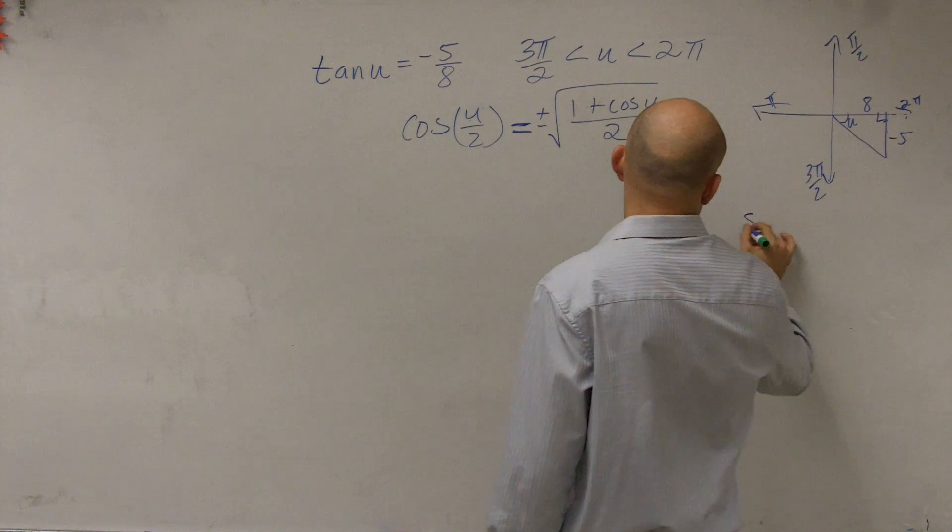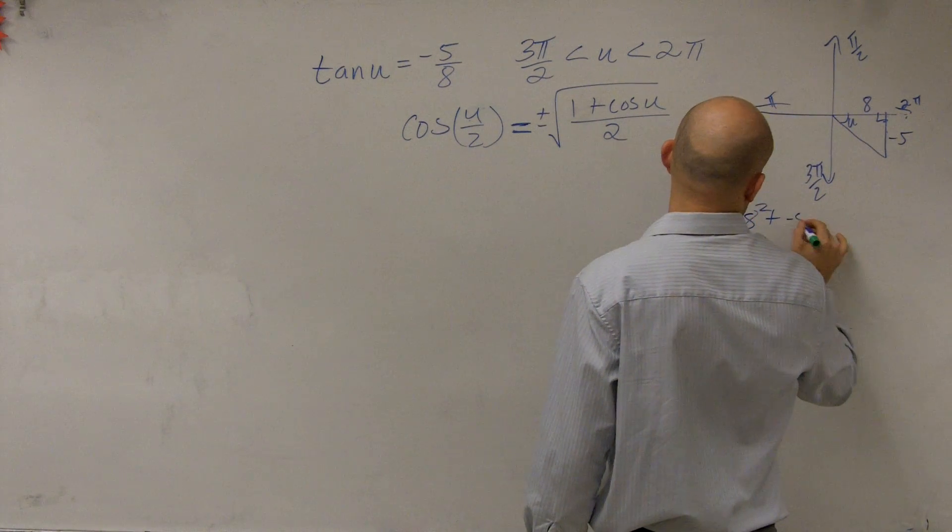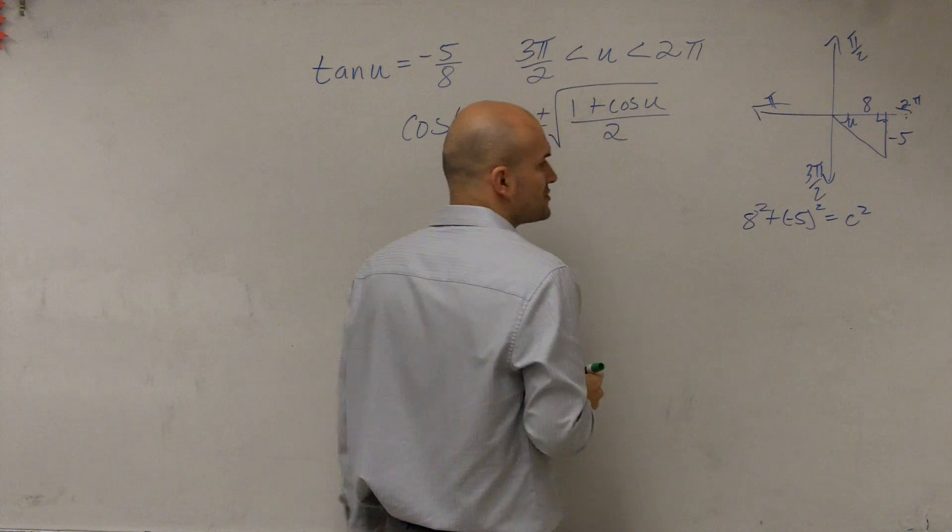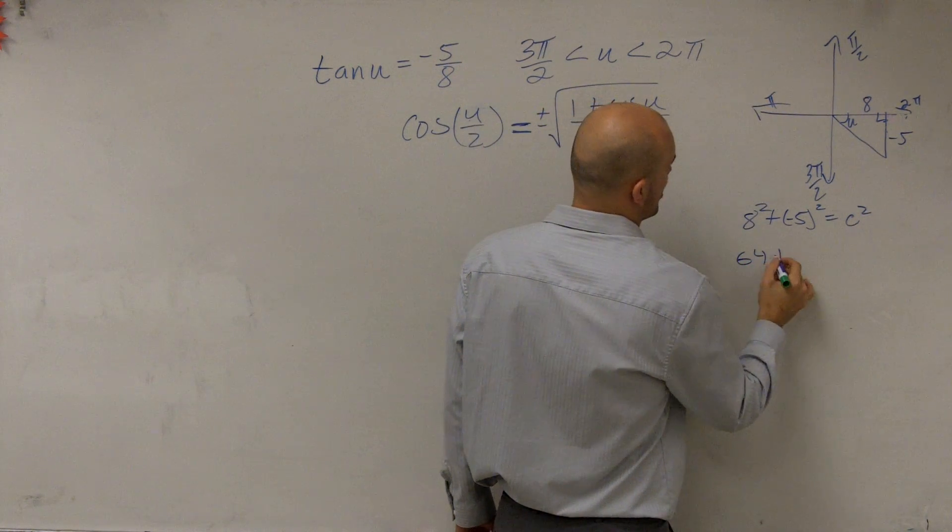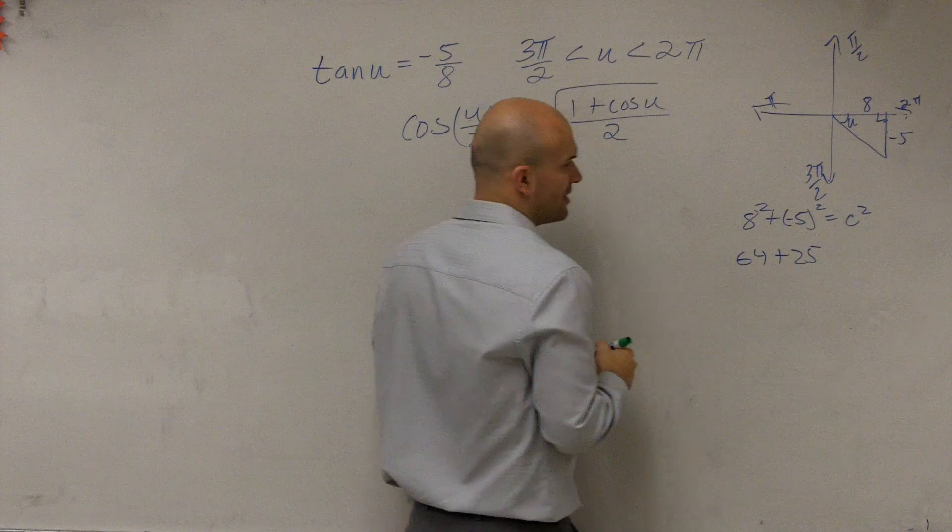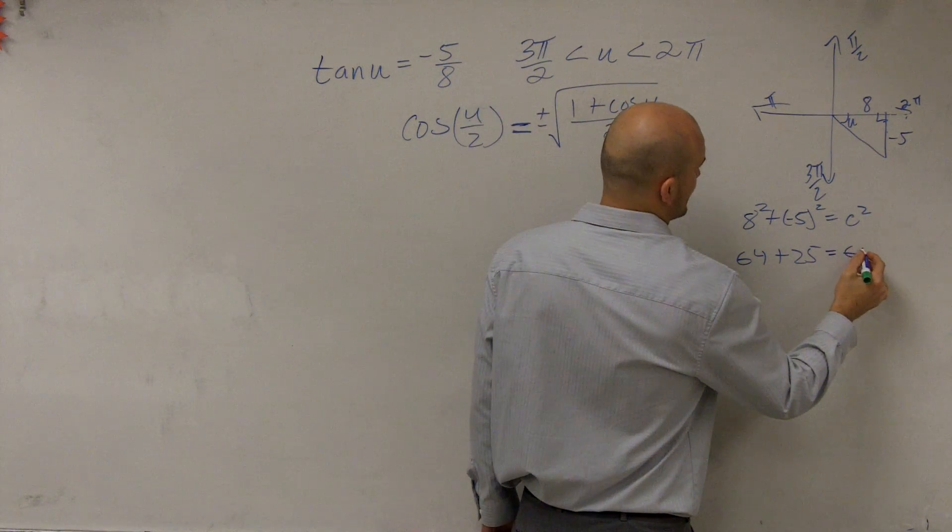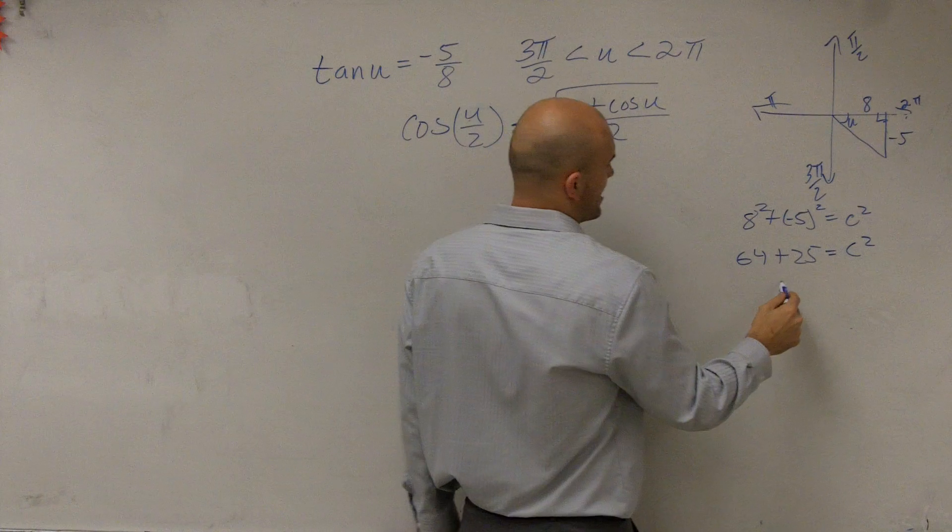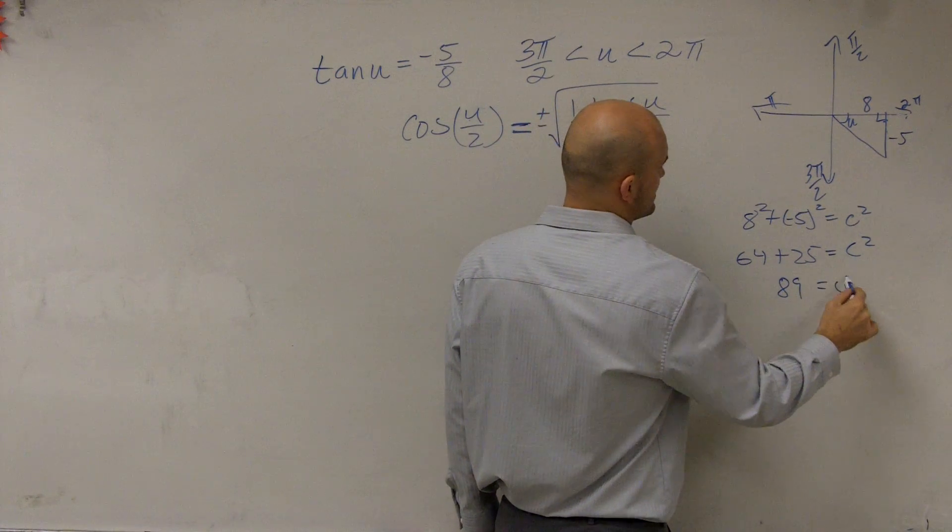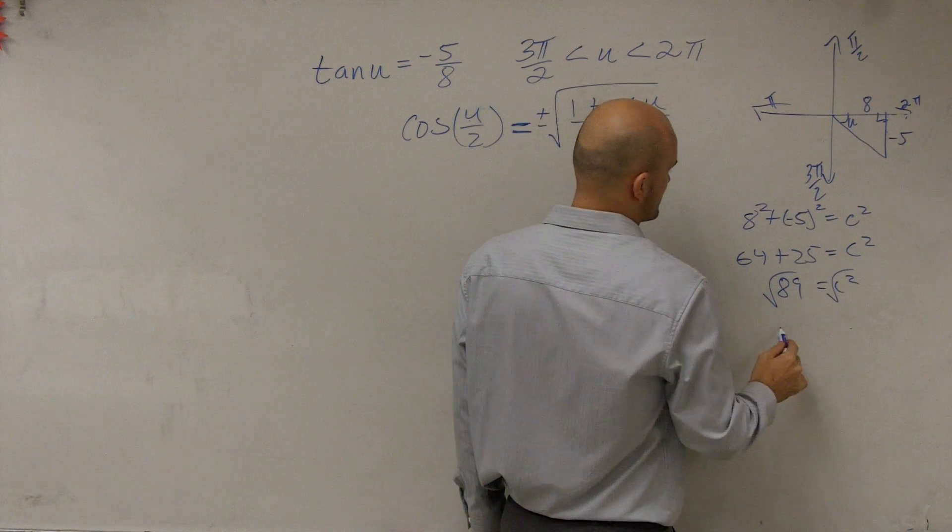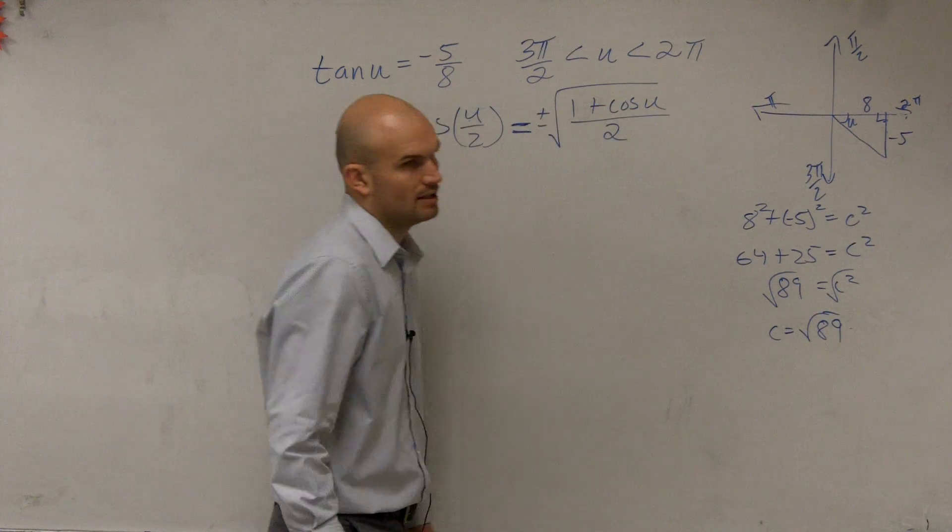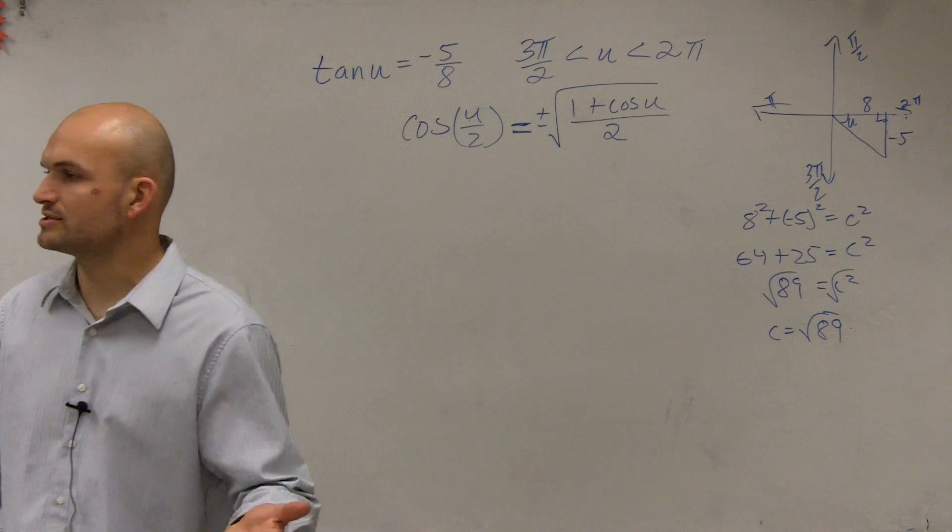So we'll say 8 squared plus negative 5 squared equals c squared, or your hypotenuse squared. So 64 plus 25 equals c squared. So we'll have 89 equals c squared, square root. c equals the square root of 89. Plus or minus, but we know it's going to be positive.